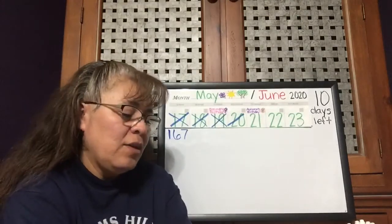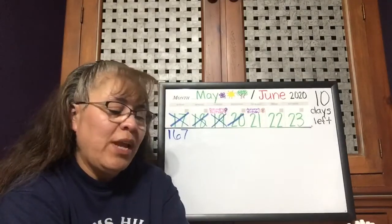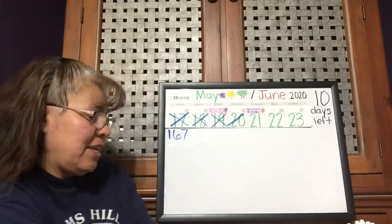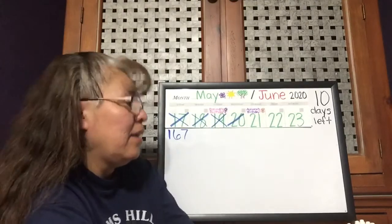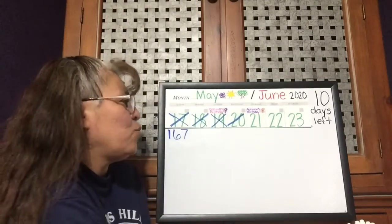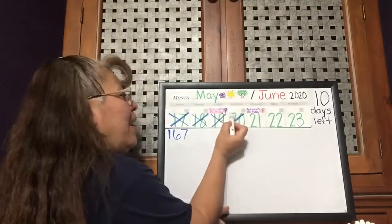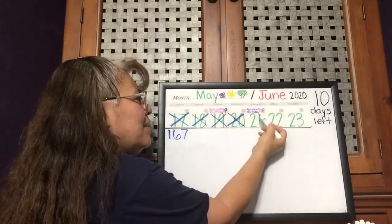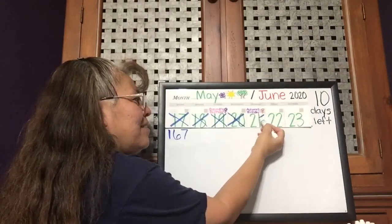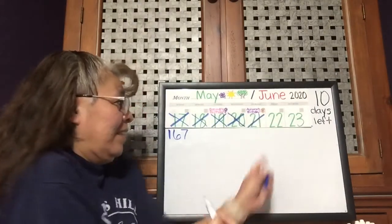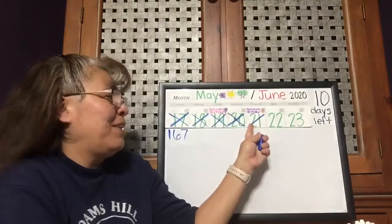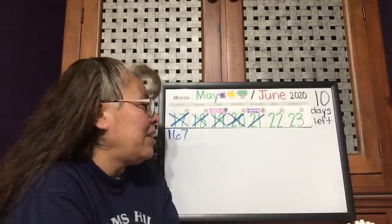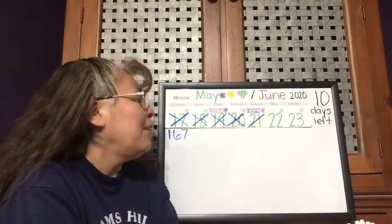So yesterday was 20, so now we're in the 20 numbers. After 20 is 21. And 21 — it's still going on, it's still happening or just starting.